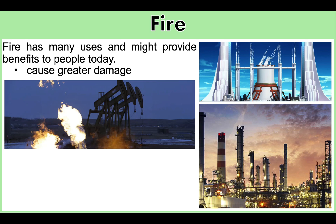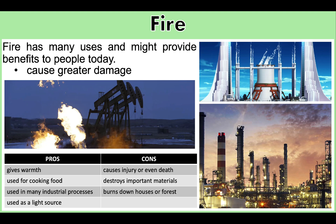Coal and other types of fossil fuels used for fire release pollutants when burned, so fire when not controlled can cause destruction and injury. This table shows the pros and cons of fire. The pros are: it gives warmth, it is used for cooking, it is used in many industrial processes, and used as a light source. The cons are: it causes injury or even death and destroys important materials and burns down houses or forests.